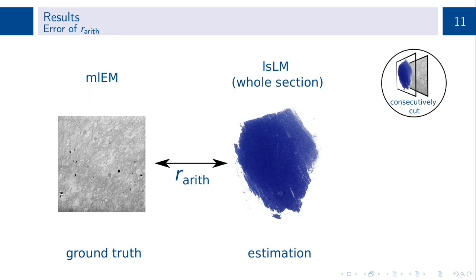The error of the arithmetic mean radius was assessed in a cross-microscopy approach. For this, we compared the whole section estimations of the arithmetic mean radius based on large-scale light microscopy to their counterparts obtained from consecutively cut, manually labeled electron microscopy sections.